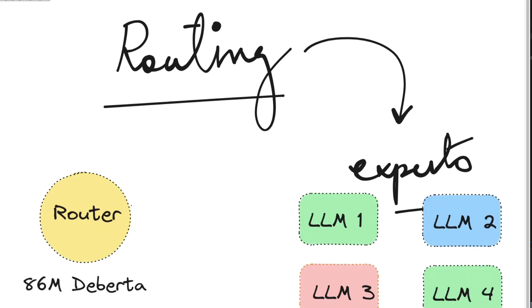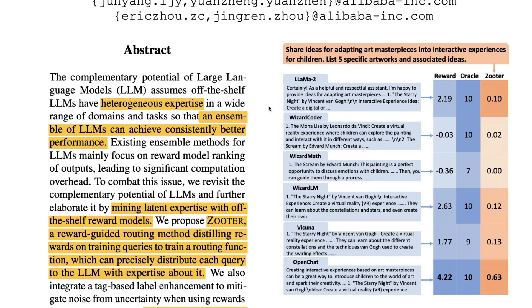The paper says that off-the-shelf LLMs — like LLaMA 2 or WizardLM, and this is an older paper — have heterogeneous expertise in a wide range of domains and tasks. Combining them like an ensemble of these LLMs can achieve consistently better performance.